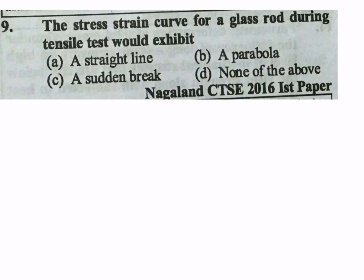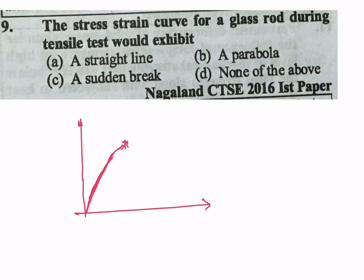Next question: The stress-strain curve for a glass rod during tensile test would exhibit — a straight line with a sudden break. For a glass rod (brittle material), the curve goes linearly and then sudden break. From the options: a straight line with a sudden break — C is the correct answer.